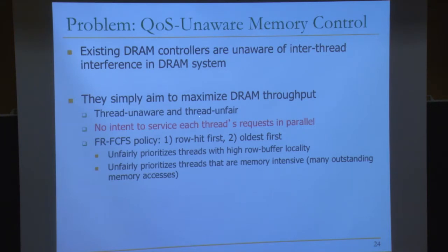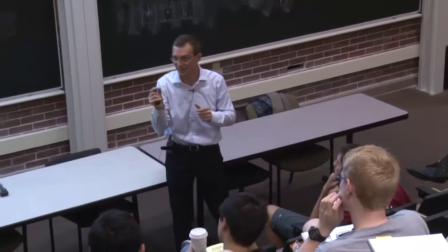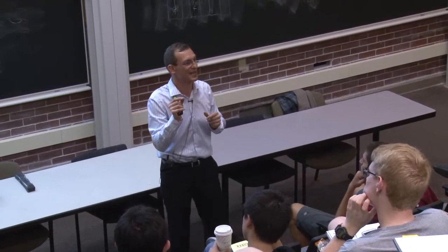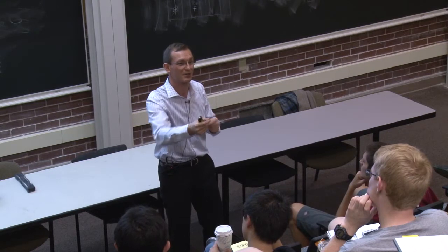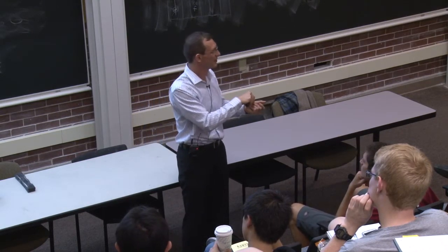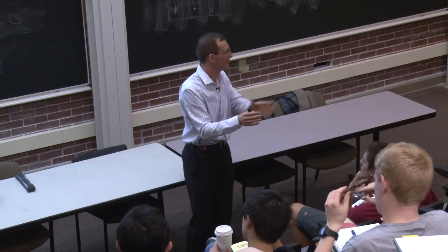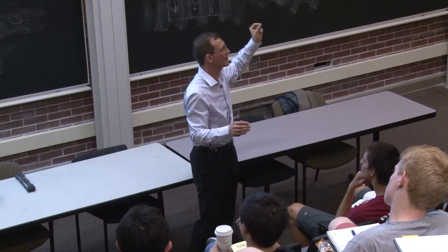Today's controllers are thread-unaware and therefore unfair. The FRCFS policy has two rules: row hit first and oldest first — both are unfair. Row hit first unfairly prioritizes threads that keep hitting in the row buffer. Oldest first is also unfair because if a thread has lots of requests, they will appear older to the memory scheduler compared to a thread that has fewer requests — the exact opposite of what you want.